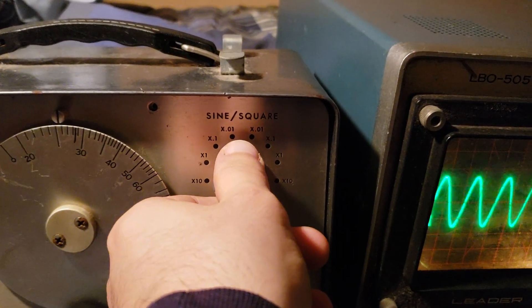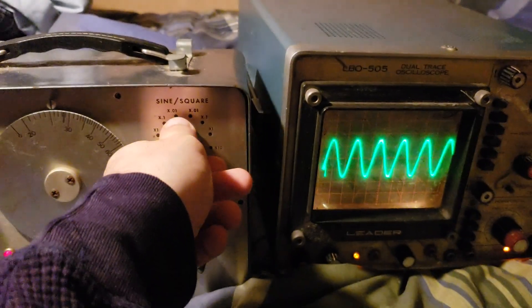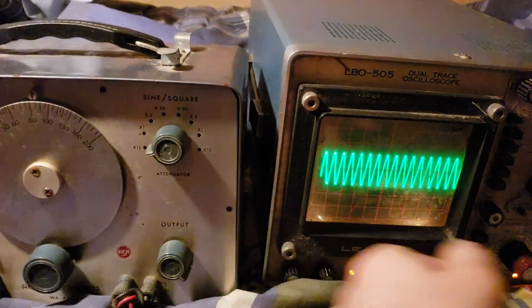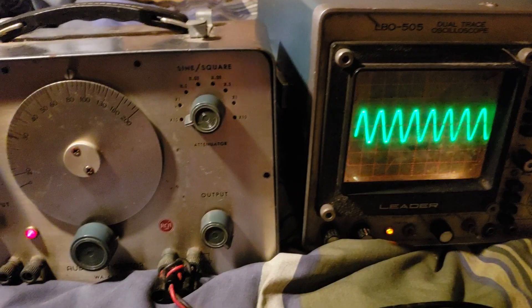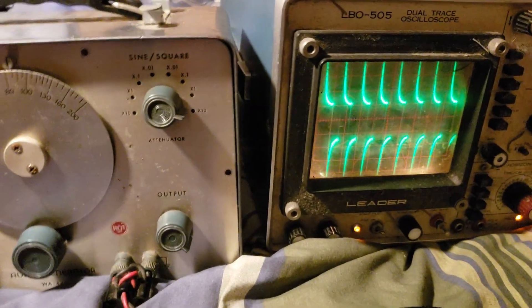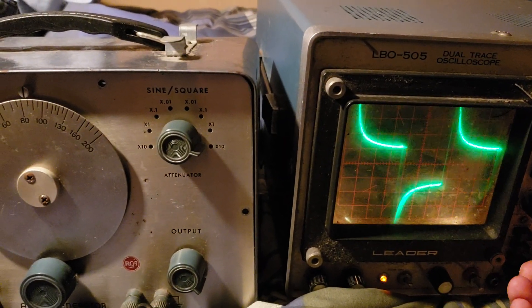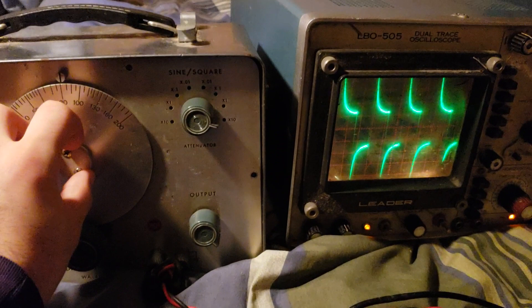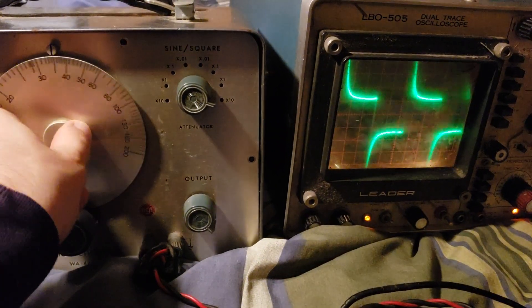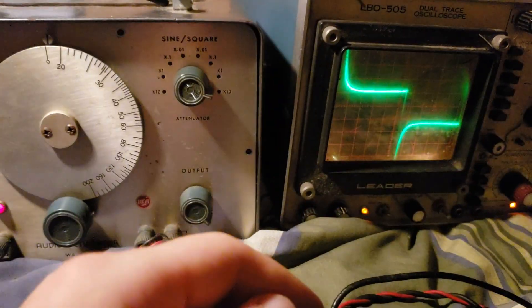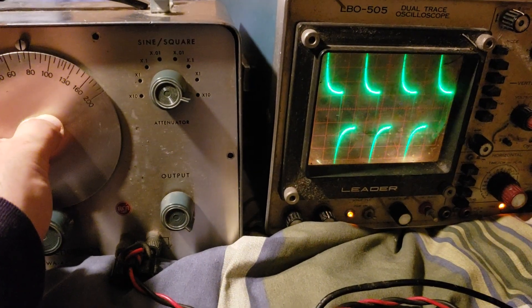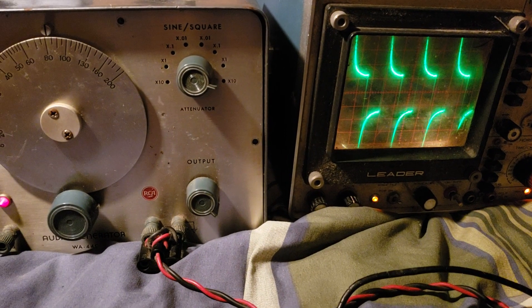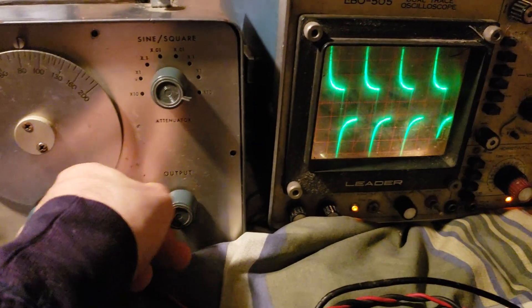But what about something like a square wave? Well that's great for testing digital. Let's get a nice sine wave here. And if we switch over from sine wave to square wave, the same thing happens. And not only that, the tone is different. You can see the wave changes.